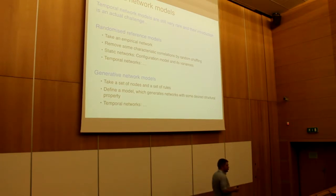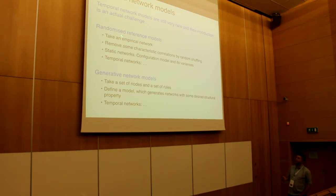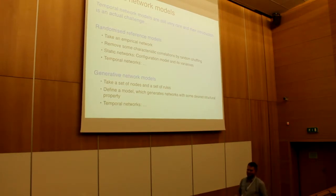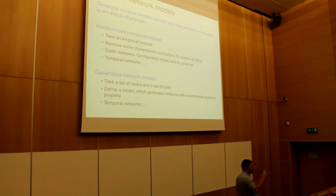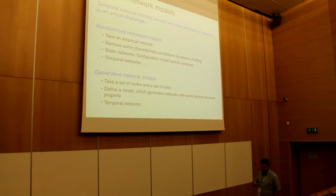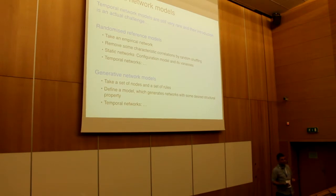Now for the main subject: models of temporal networks. There have been two directions: randomized reference models, which I'll speak about today, and generative network models, which I'll speak about tomorrow after lunch. In case of randomized reference models, we take an empirical temporal network — an interaction sequence — and we shuffle it in a clever way to remove some static or temporal correlations. We then put a dynamical process on top and see how, by removing different correlations, the evolution of the dynamical process changes.